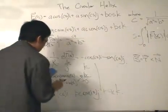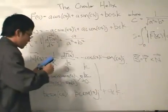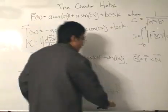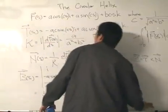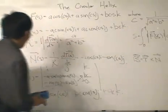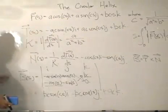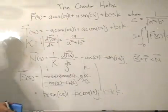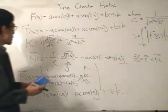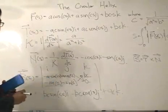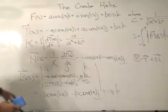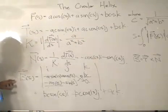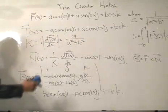We now have the unit binormal vector. Bear in mind that torsion is what we ultimately want, so we need to differentiate B with respect to s next.